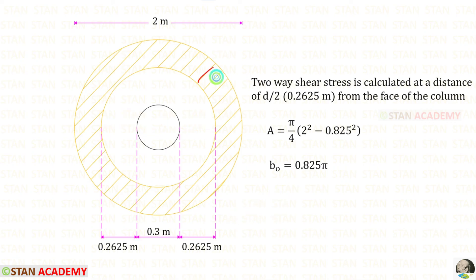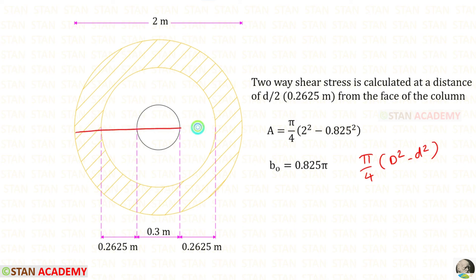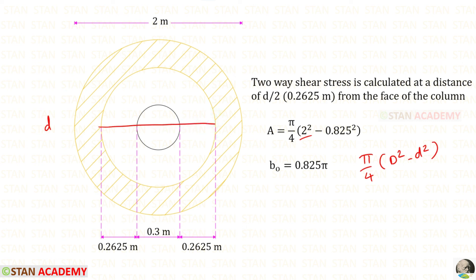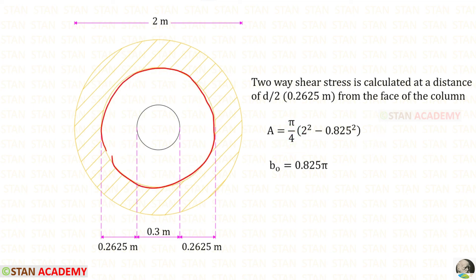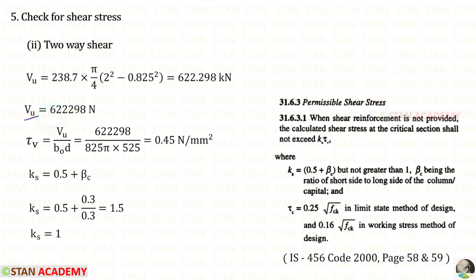We find the shaded area using pi by 4 into (D squared minus d squared), where D is 2 m and small d is 0.825 m. The perimeter is 0.825 pi. For VU we calculate the result, and then find tau V using the shear stress formula.